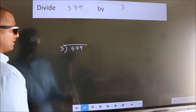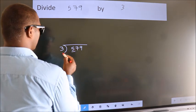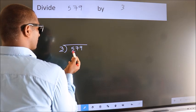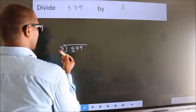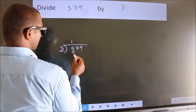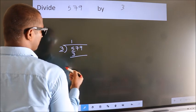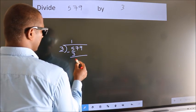Next, here we have 5, here 3. A number close to 5 in 3 table is 3 ones, 3. Now, we should subtract. We get 2.